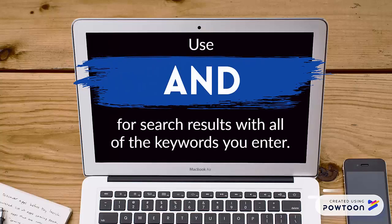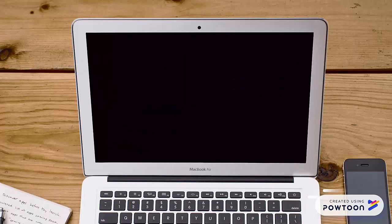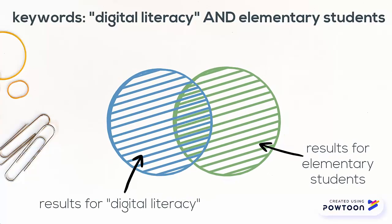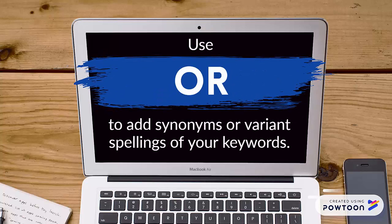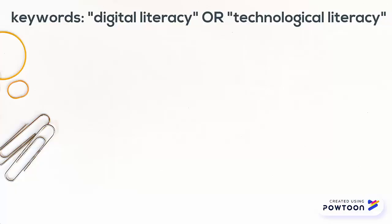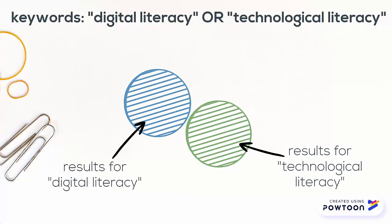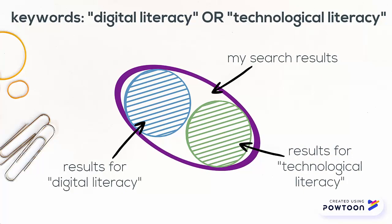If you use AND, you'll only get results that have all of the keywords you've entered. For instance, searching for digital literacy AND elementary student will return results with both of those search terms. You can use OR to add synonyms or variant spellings for your search term, and you'll get any results that have at least one of the keywords you've specified, which can increase your chances of finding relevant results. For instance, I could search digital literacy OR technological literacy.